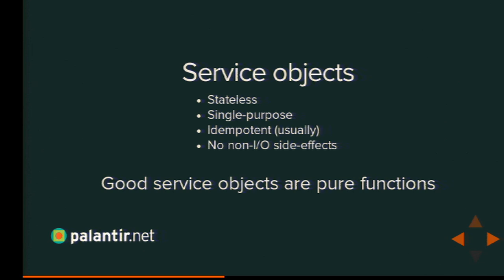Who's heard the term 'iceberg class' before? An iceberg class is a class that has only one public method — everything else is protected or private or a call to some other object. Its public-facing API is one method. An object with one method on it that is a pure function is exactly the same thing as a pure function. It's just a syntactic difference — it is conceptually the exact same thing.